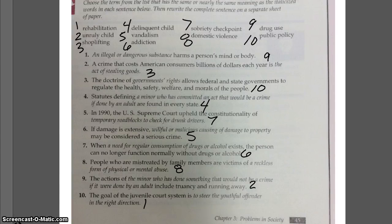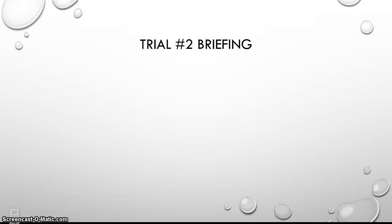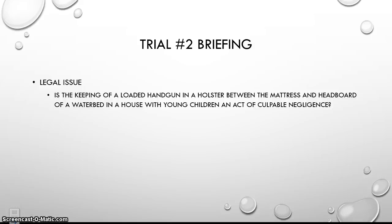Alright, so there you have it, folks. Take some time, look those over, and I put that in your gradebook as a formative. If you failed to do it or got a bunch wrong, that's why there's a zero. Now we're going to talk about trial number two — a little briefing so you have an idea of what's going on when they start using big words. The legal issue in this case is the keeping of a loaded gun in a holster between the mattress and headboard of a waterbed in a house with young children — an act of culpable negligence.